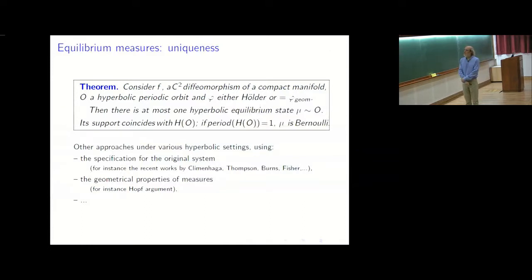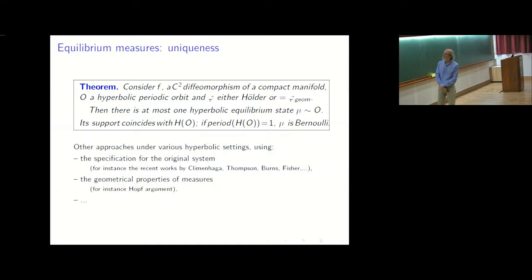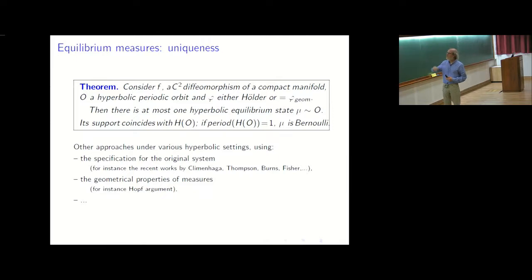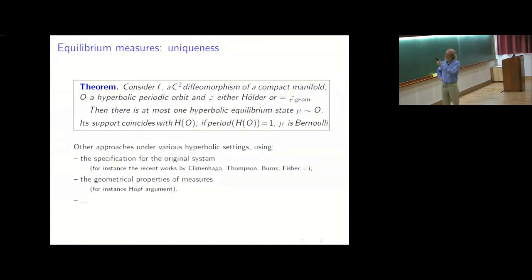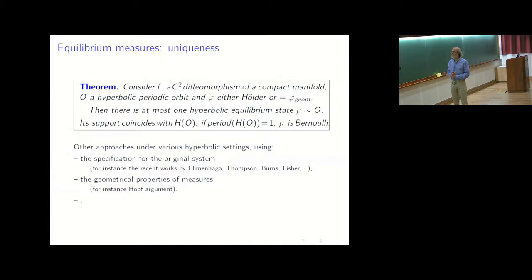There are many results about uniqueness of equilibrium measures in various settings using hyperbolicity properties, with different approaches. One approach uses specification, a kind of shadowing — this appears for instance in recent works by Climenhaga, Thompson, Burns, and Fisher studying geodesic flow on surfaces. Another approach uses more geometrical properties of measures, as in the case of SRB measures using the Hopf argument. Our approach, as you guessed, is to use symbolic coding.